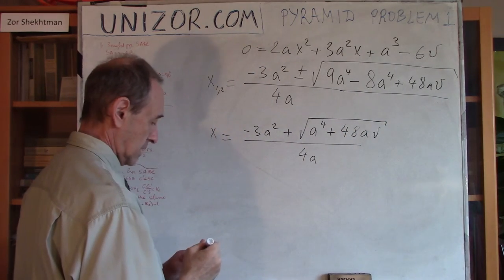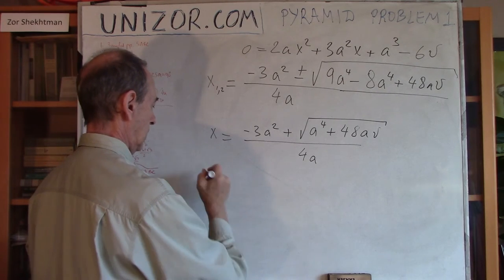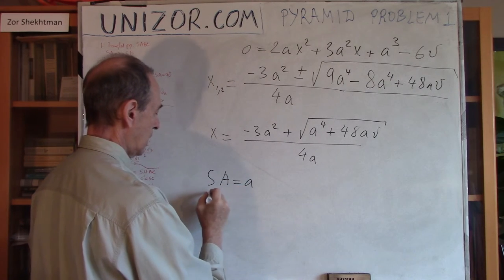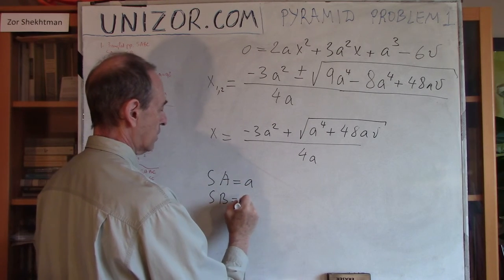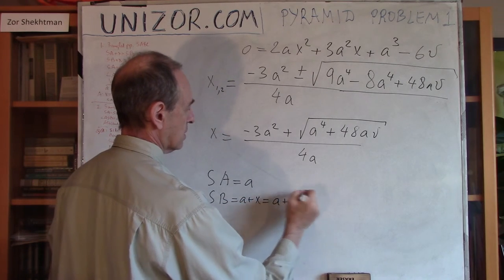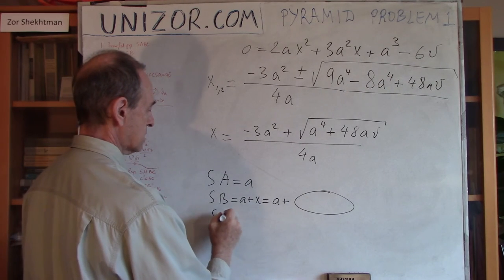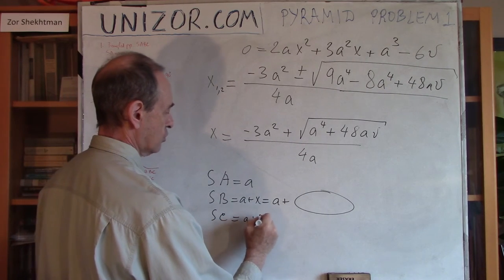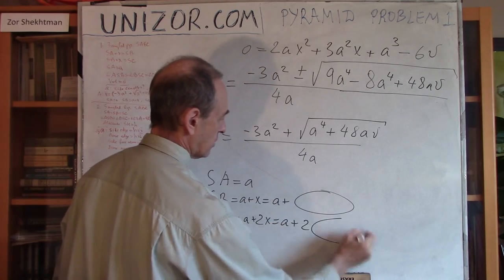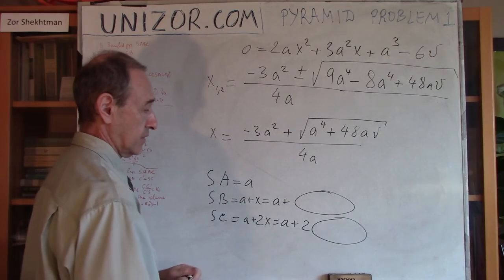The solution would be X equals (minus 3A squared plus square root of 9A to the fourth plus 48AV) divided by 4A. That's the solution for X, which means that we have determined all the side edges. SA was given to us as A, SB was equal to A plus X, which is A plus this expression, and SC was A plus 2X, which is A plus 2 times this same expression. That's the solution.